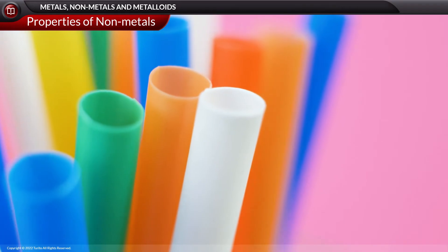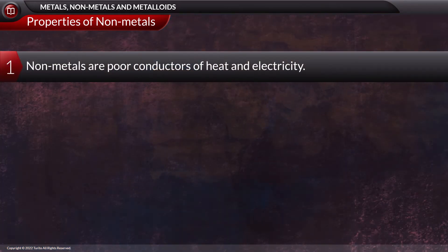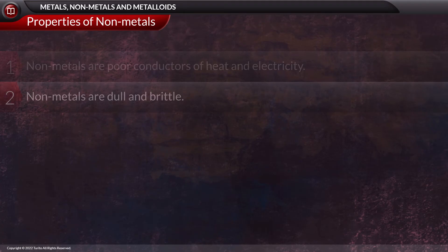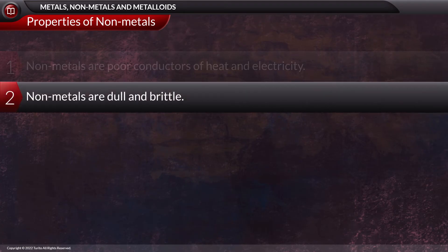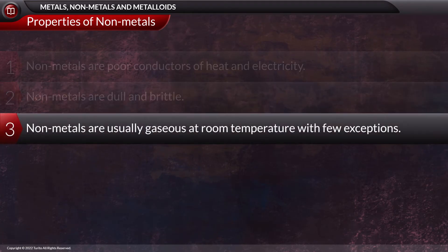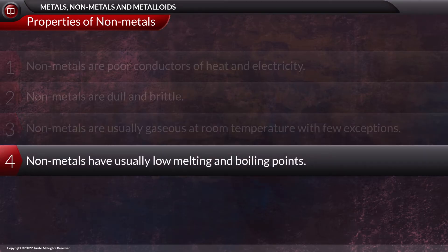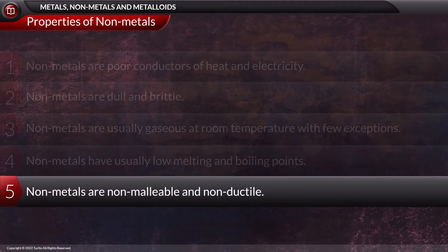The properties of non-metals are: non-metals are poor conductors of heat and electricity. Non-metals are dull and brittle. Non-metals are usually gaseous at room temperature, with few exceptions. Thus, non-metals usually have low melting and boiling points. Non-metals are non-malleable and non-ductile.